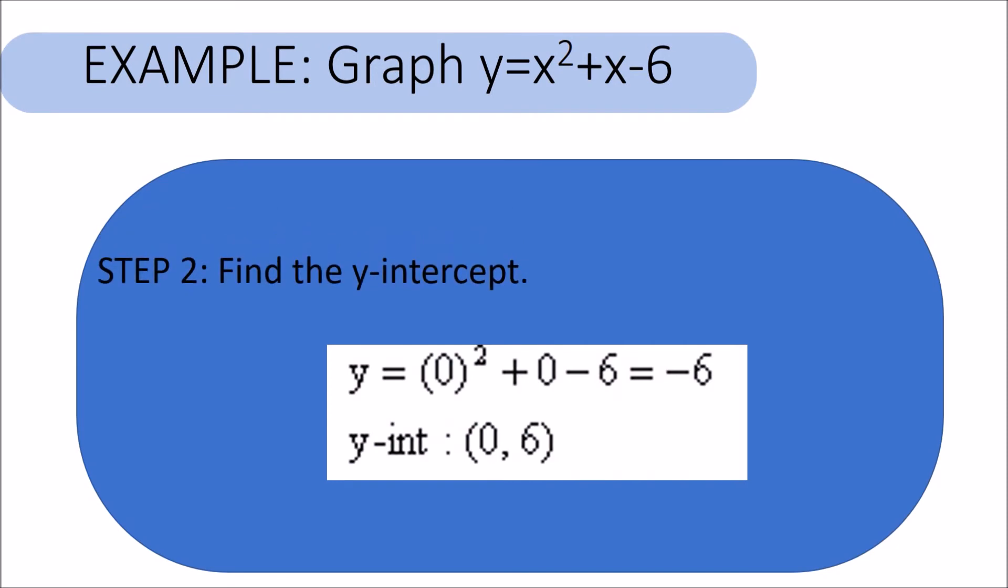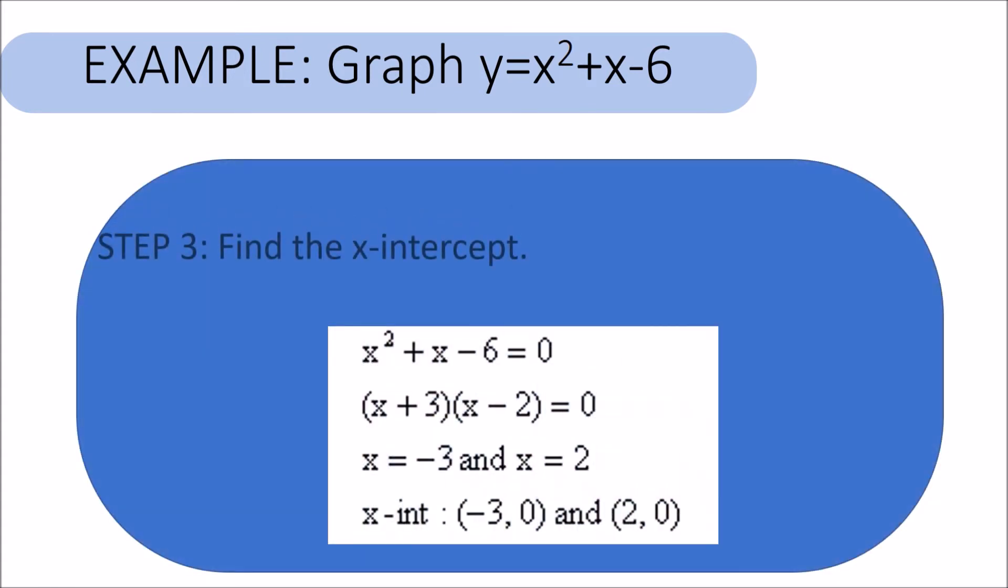Step 2, find the y-intercept. To find the y-intercept, let x equal 0 and solve for y. Step 3, find the x-intercepts. To find the x-intercept, let y equal 0 and solve for x. You can solve for x by factoring, completing the square, or using the quadratic formula.